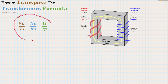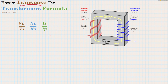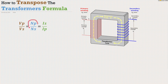Let's look at this transformers formula and learn how to transpose it. It's a really simple method of transposing. We've got the two voltages — primary and secondary. We've got number of turns primary and number of turns secondary. That's how many times we've wound round each side of the transformer, determining whether it's a step down or a step up transformer.